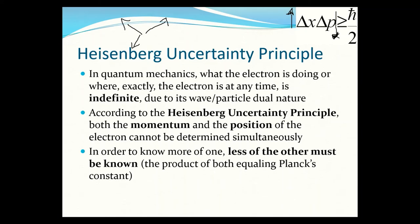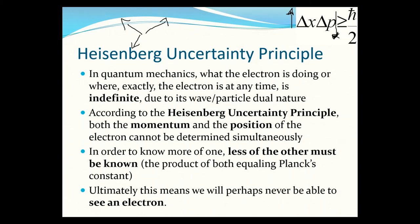This has deep implications. The more you know about an electron's position, the less you know about its speed, making it essentially impossible to 'catch.' More philosophically: human brains run on electrical impulses, and if you could predict exactly how those electrons move in the brain, you could predict every decision a person will make. But the uncertainty principle says that's impossible — which perhaps means we do have free will and there's no such thing as fate.